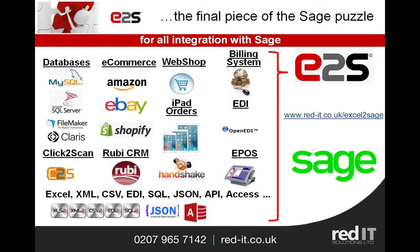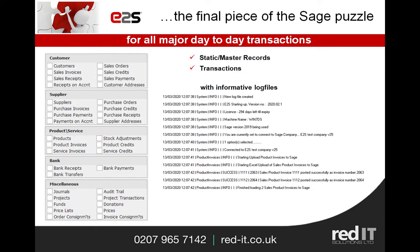So what's Excel to Sage? It's the final piece of the Sage puzzle — what you need for all your integration needs with Sage. It caters for databases from MySQL and SQL Server, as well as e-commerce. I'm going to show you the Amazon import, but it also does eBay, Shopify and so on. It links into various webshops, billing systems, EDI systems, and can import from iPhones, iPads, and all the normal file formats like Excel and CSV.